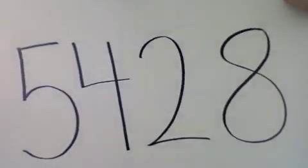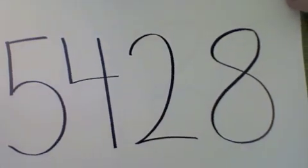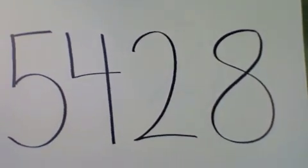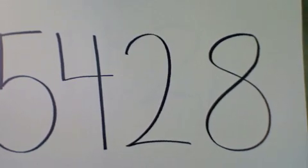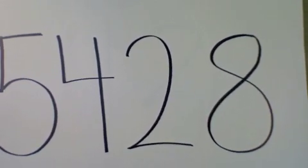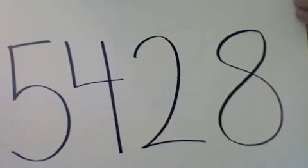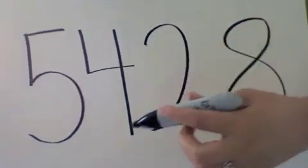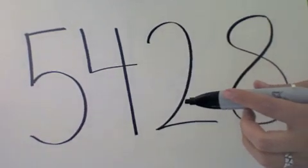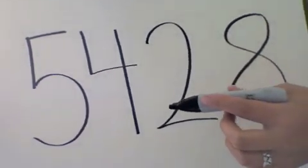Here, we have 5,428. We are going to round this number. In order to begin rounding, we need to first underline the place value that we are rounding to. We are going to round to the tens. So we are going to underline this right here.